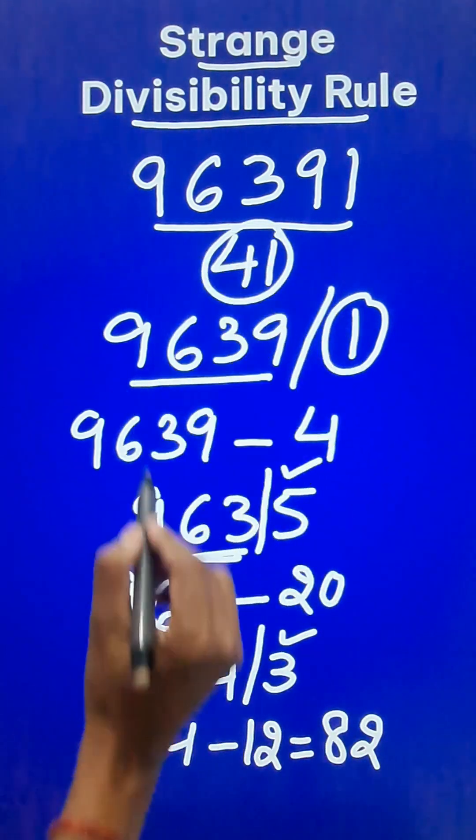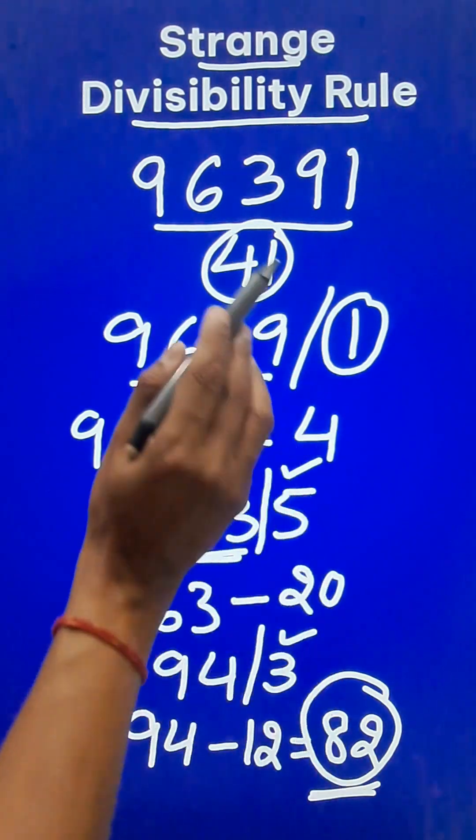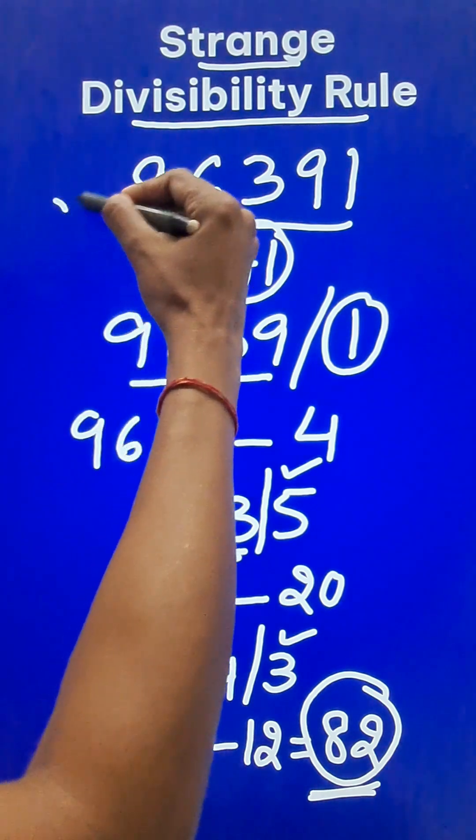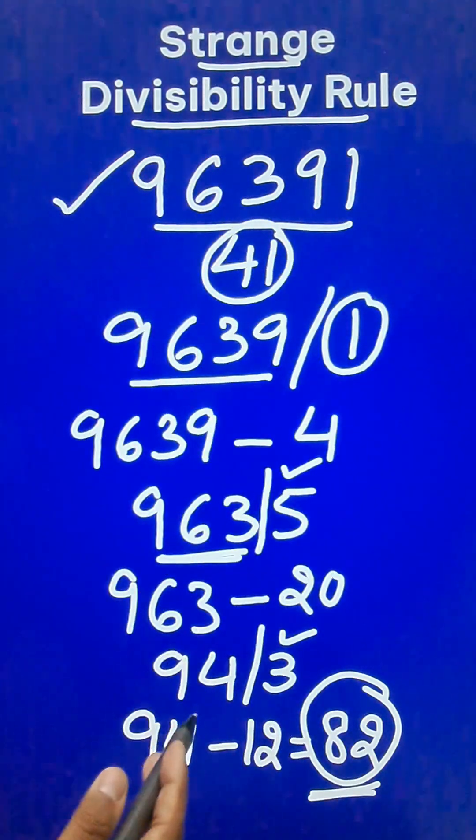Now the double of 41 is 82 right? So 82 is divisible by 41 and therefore the entire number 96391 is divisible by 41.